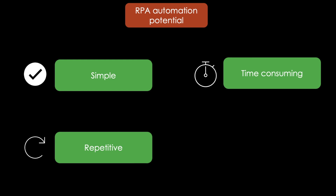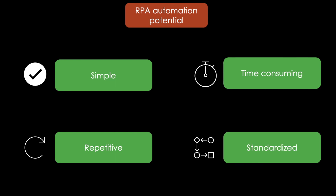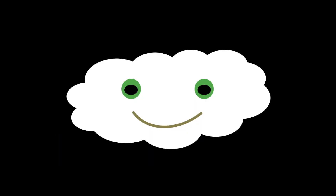And last but not least, the processes should have a high degree of standardization, so there is little to no volatility in the way the business processes are executed. This means that virtually any high volume, business rules driven and repetitive process is a great candidate for automation.